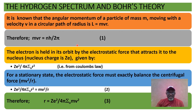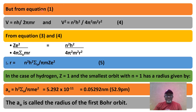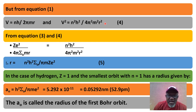Bear equation 1 in mind because we're going to obtain something from there. From equation 2, making r the subject: r = Ze²/(4πε₀mv²), and that is equation 3. ε₀ is the permittivity of free space, a constant. From equation 1, making v the subject gives v = nh/(2πmr), and squaring both sides gives v² = n²h²/(4π²m²r²), which is equation 4. Now from equations 3 and 4, Ze²/(4πε₀mr) = n²h²/(4π²m²r²). If we solve this, we get equation 5 for r.